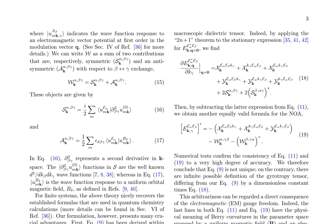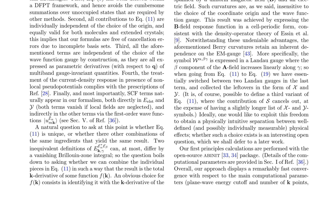The derived expression for the gyrotropy tensor, equation 11, is investigated for uniqueness, and it is found that two inequivalent definitions can differ at most by a vanishing Brillouin zone integral. The authors identify the k-derivative of the macroscopic dielectric tensor as a possible choice for combining the individual pieces to yield the total k-derivative of some function f(k). By applying the 2n+1 theorem, they derive an alternative expression, equation 19, consistent with equation 11 to high accuracy. The arbitrariness in the definition is attributed to electromagnetic gauge freedom, with Berry curvatures in the parameter space spanned by uniform magnetic and electric fields being insensitive to the choice of coordinate origin and wave function gauge.